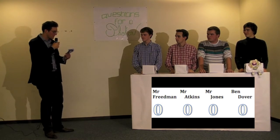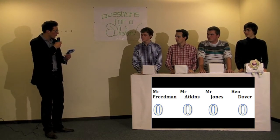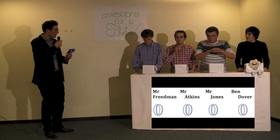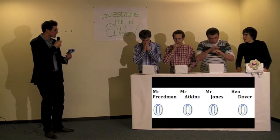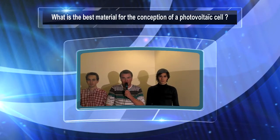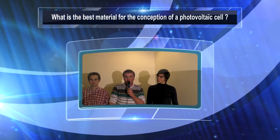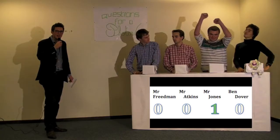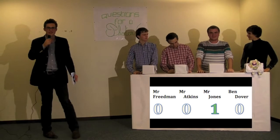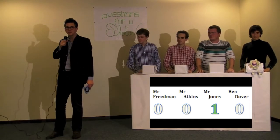Let's begin with the first question. Be ready, gentlemen. What is the ideal material for the conception of a photovoltaic cell? The Silicium. It's a semiconductor and it has a perfect bond gap energy. And that's correct.